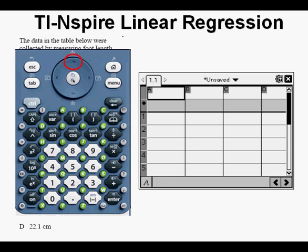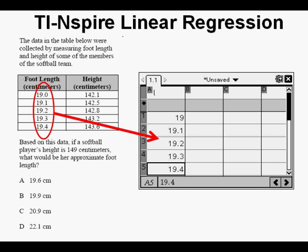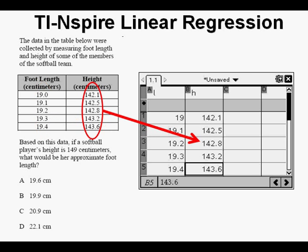Arrow up to the top cell of column A. Here we can enter the word length as title, or maybe just L for length. Use the little green letter keys on the keypad. And then in cells A1 through A5 we put in the data for foot length. Next we can enter H for height at the top of column B with all the numbers underneath it in order.